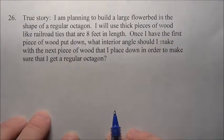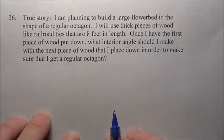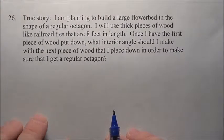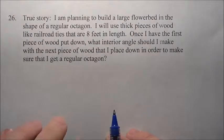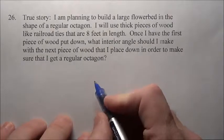Once I have the first piece of wood put down, what interior angle should I make with the next piece of wood that I place down in order to make sure that I get a regular octagon?